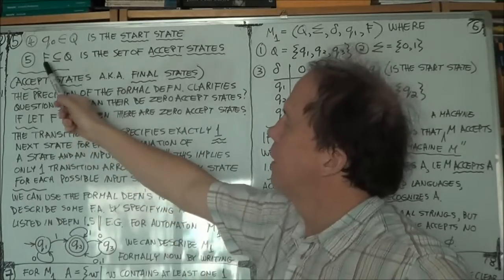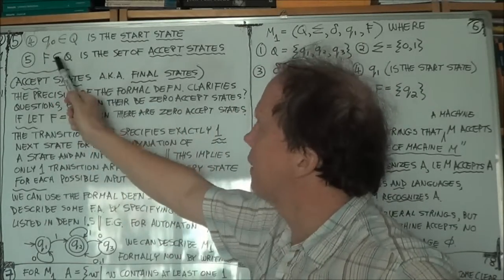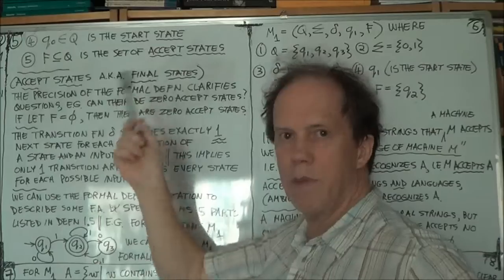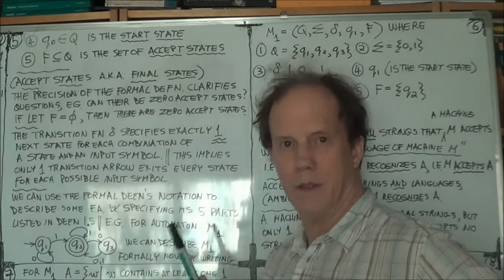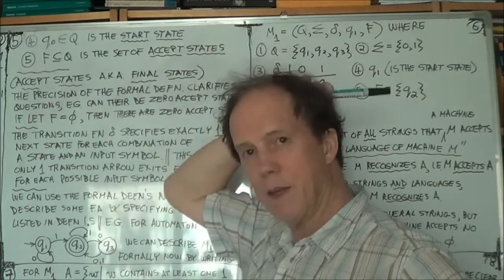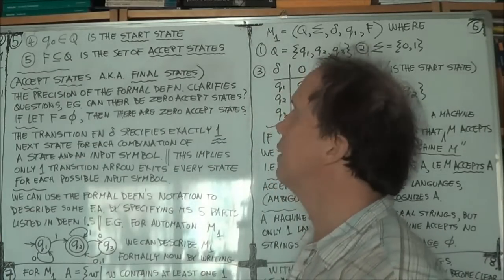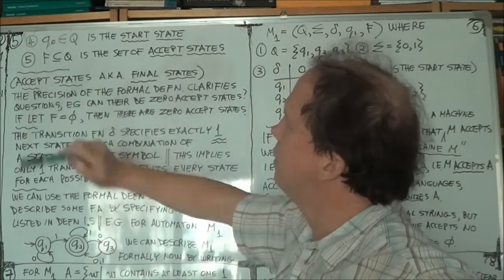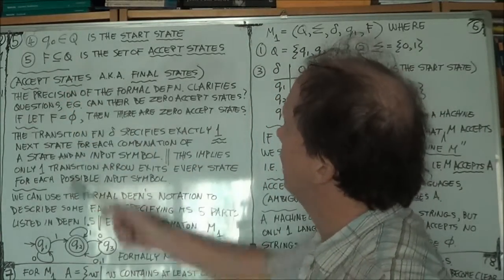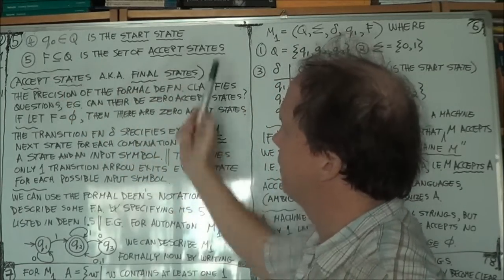And that set of states will be a subset of Q. Remember, Q is the set of all states in your automaton, so your accept states will be a subset of those states. So F is a subset of Q, and F is the set of accept states.